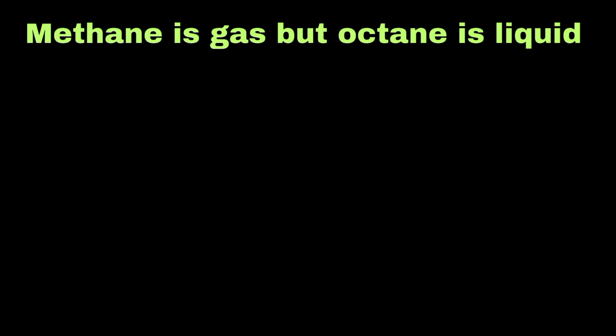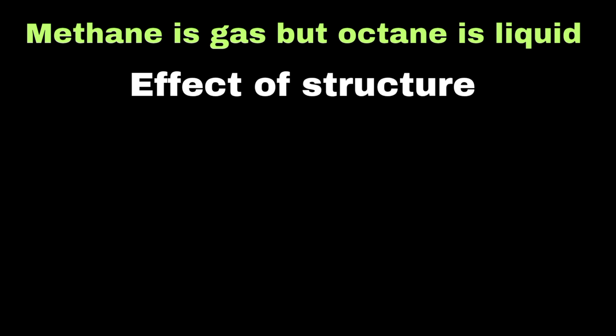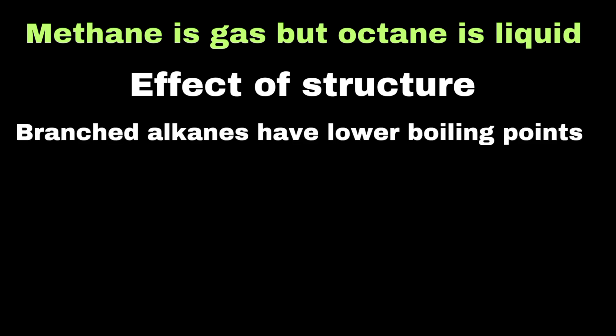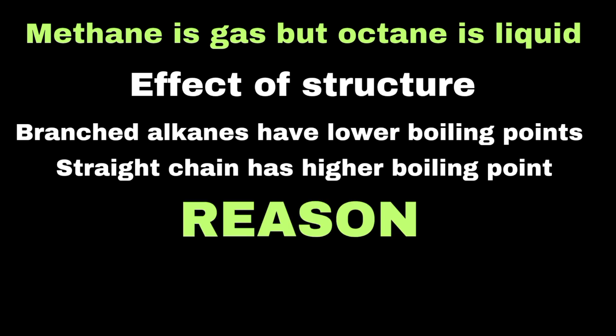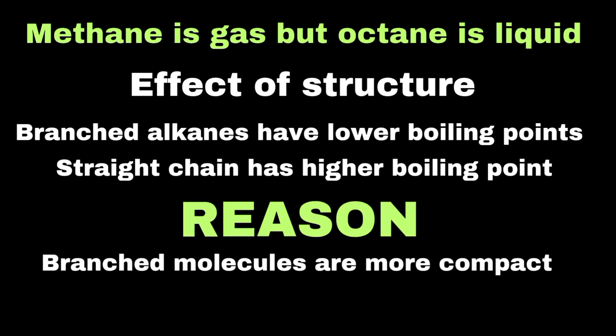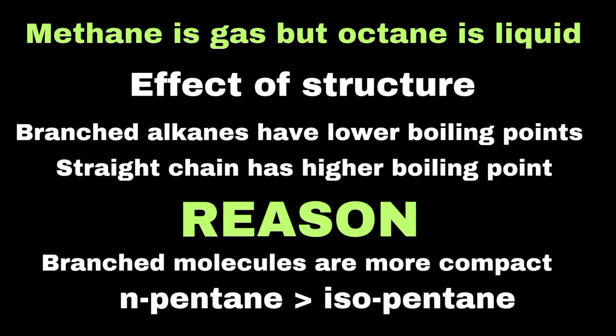The structure of an alkane also affects its boiling point. Branched-chain alkanes have lower boiling points than straight-chain alkanes of the same molecular formula, because branched molecules are more compact and have less surface area for intermolecular forces to act, making it easier for them to evaporate. For example, n-pentane has a higher boiling point than its branched isomer isopentane.